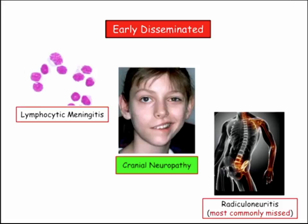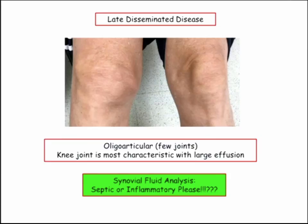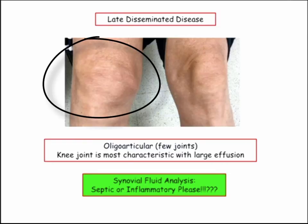Early disseminated cardiac disease, lymphocytic meningitis, Bell's palsy. You also get plexopathies — sacral plexopathy, brachial plexopathy — which are often missed and attributed to post-infectious or post-viral causes. And then the joints: acute monoarticular arthritis with a big effusion.